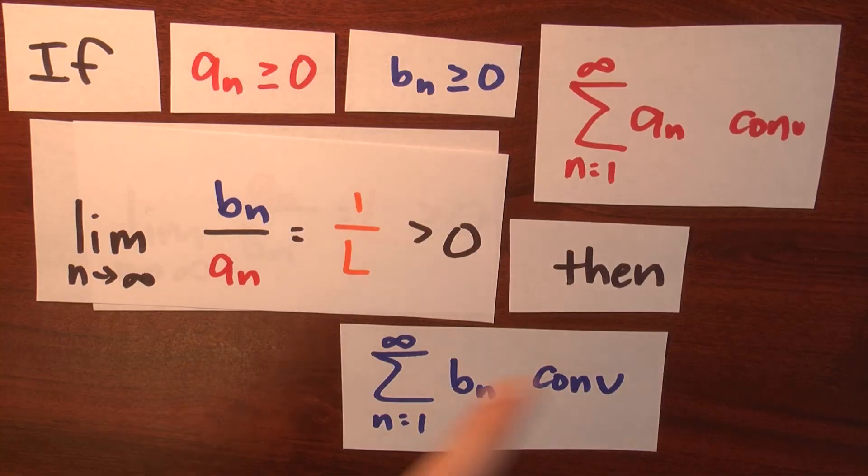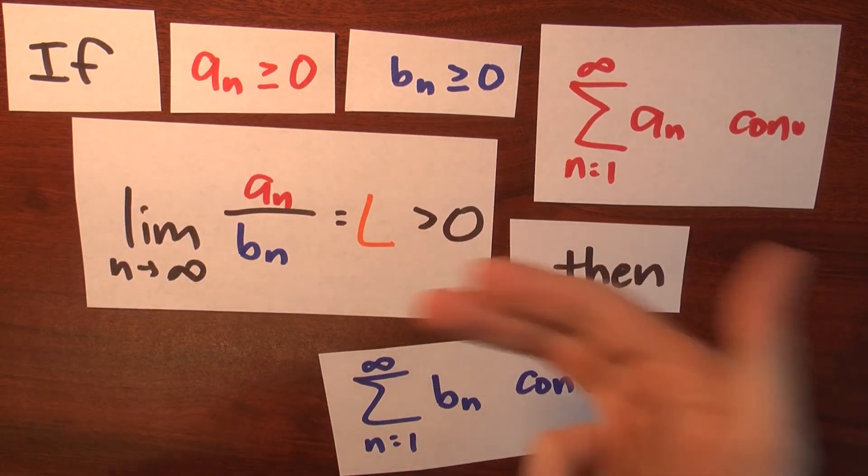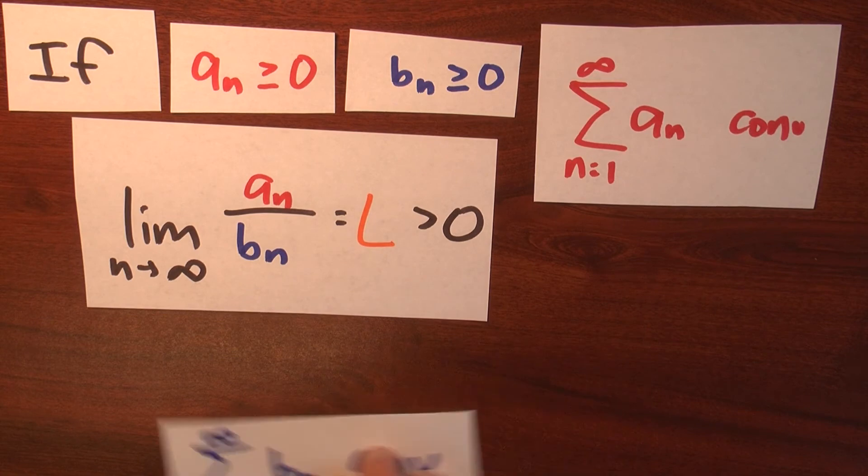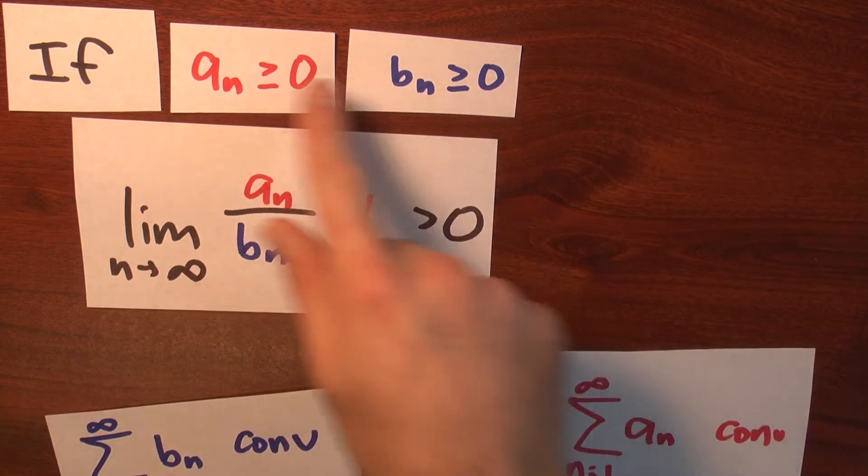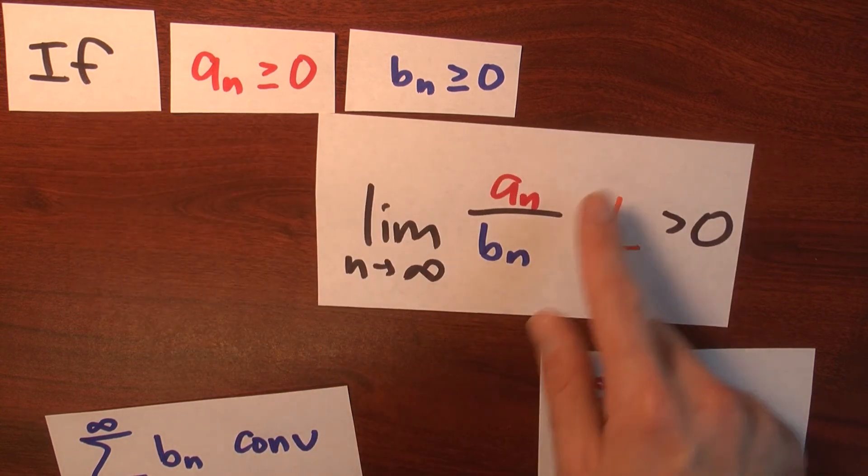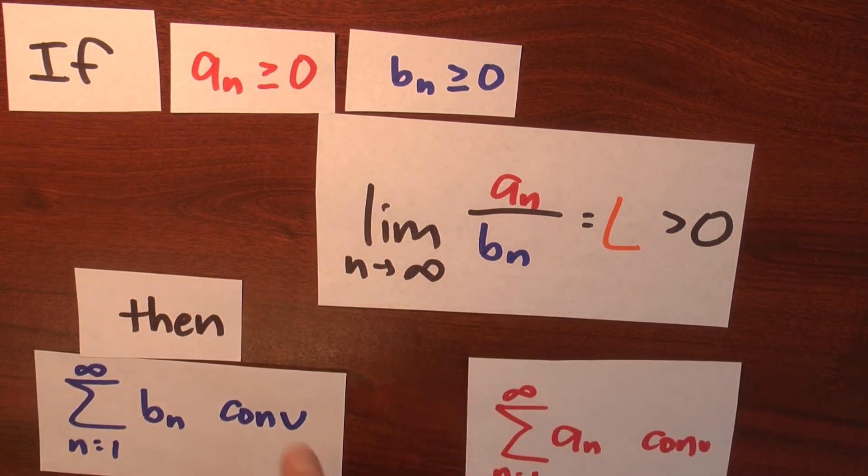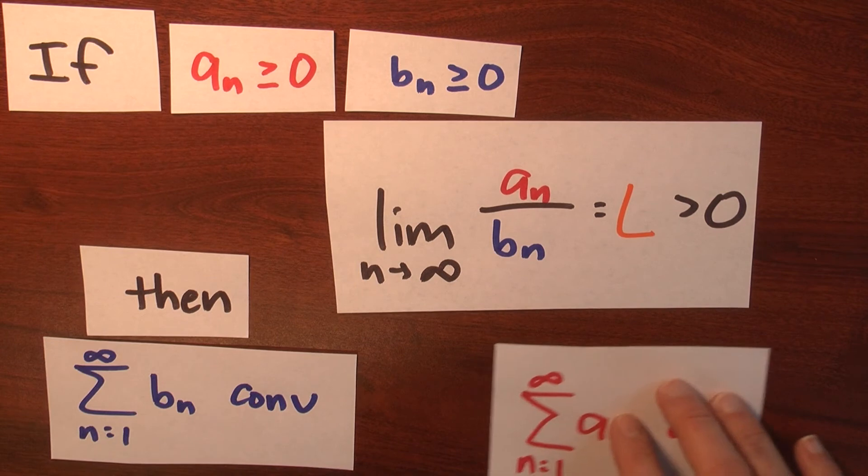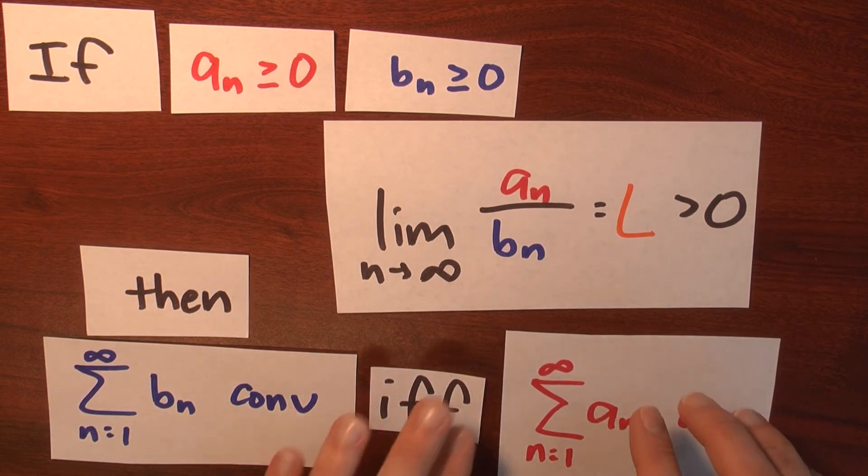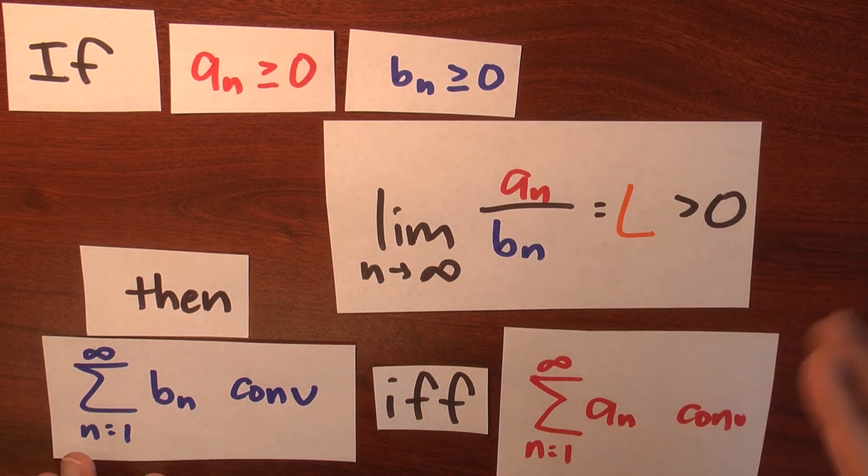Now I'll put it all together. Since the convergence of a sub n implies the convergence of b sub n, and the convergence of b sub n implies the convergence of a sub n in the presence of this limit statement, I can simplify this a bit. I can say that if I've got two sequences of numbers, a sub n and b sub n, both non-negative, and this limit exists and is equal to some number bigger than 0, then this series converges if and only if this series converges. The sum of the b sub n's converges if and only if the sum of the a sub n's converges.